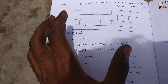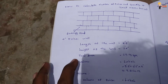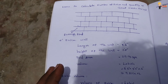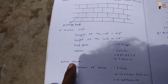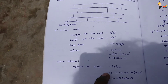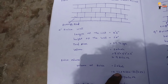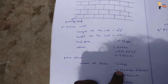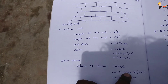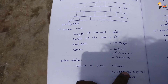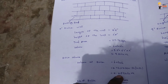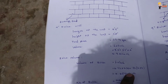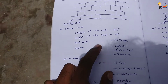The total volume of the wall is calculated, and we can find the volume of brick and cement mortar. Converting the 4-inch brick, the volume of one brick is 0.0594 cubic feet. This is the volume of a single brick.